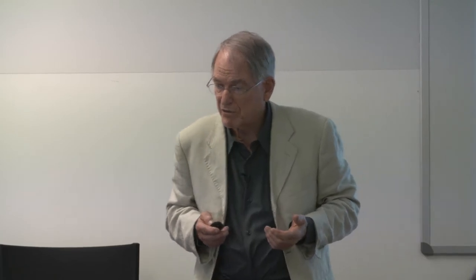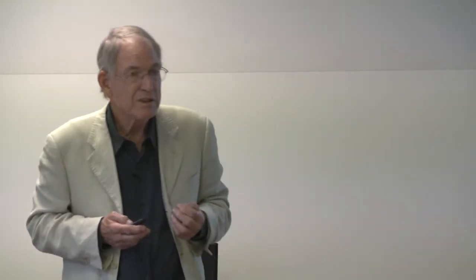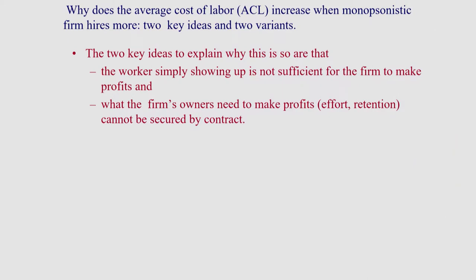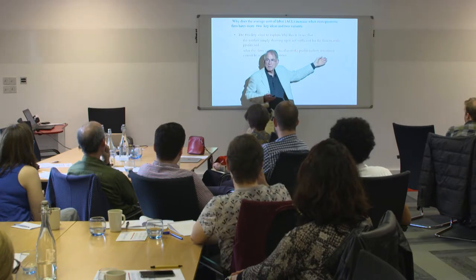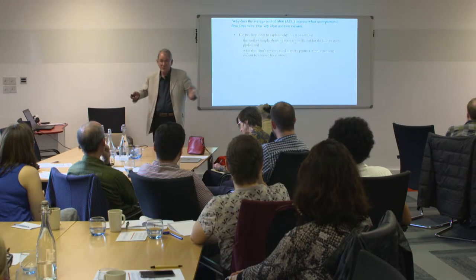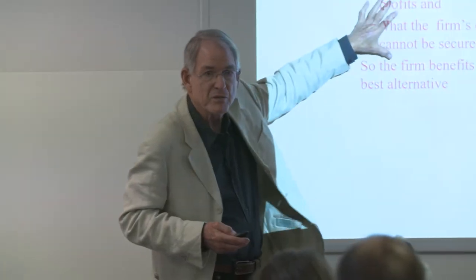We first have to think about why the average cost of labor would rise — that's what the monopsonistic firm is facing. The background is that there are two key ideas. The first, basic to any modern model of the labor market, is that simply showing up is not going to make profits for the employer. The worker has to do something that cannot be contracted for — work hard, not leave the firm — in order for profits to happen. Given the incompleteness of the contract, the firm can benefit by offering the worker a wage higher than her next best alternative.